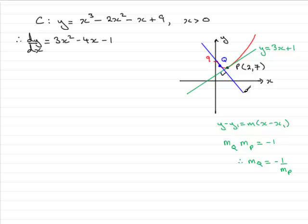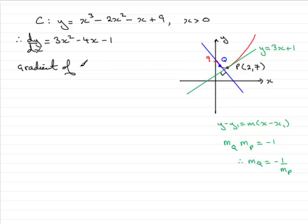All I need to do is recognise that the gradient of Q is the gradient of the tangent, and I can then set dy/dx equal to that gradient and solve for x. So first, we're going to get the gradient of Q from the gradient of P. We know that the gradient of the tangent at P was 3, found in the previous part of the question. So the gradient of Q equals minus 1 third by this result.